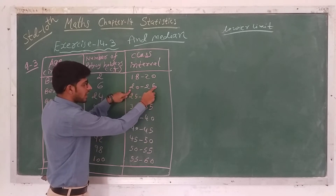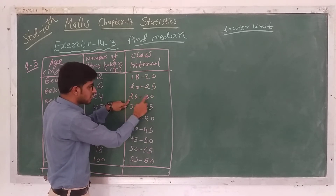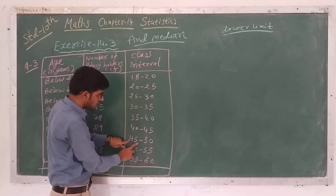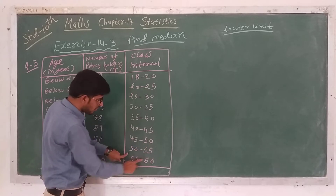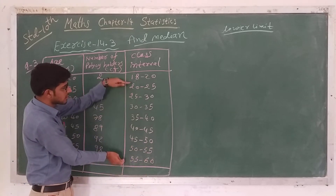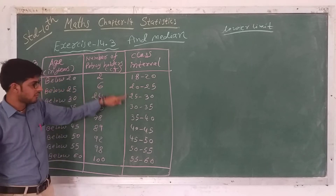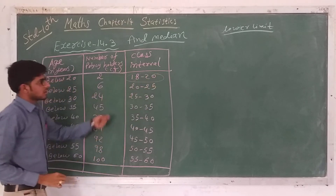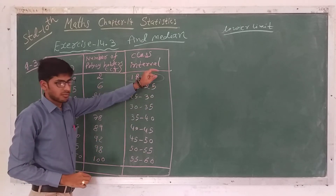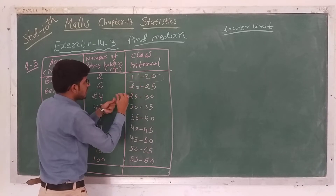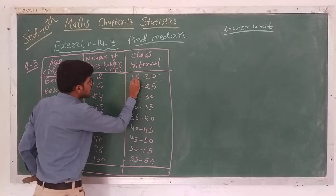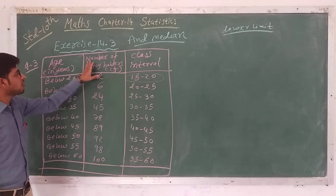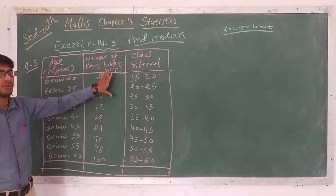Here we can observe one thing: the class width for 18 to 20 is 2, but for 20 to 25, 25 to 30, and all the remaining classes the class width is 5. All classes have class width 5 except the first one. So we can write the first class as 15 to 20, making it consistent with class width 5.